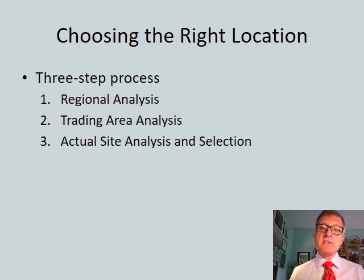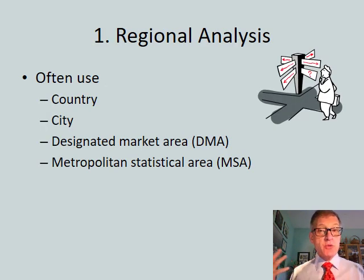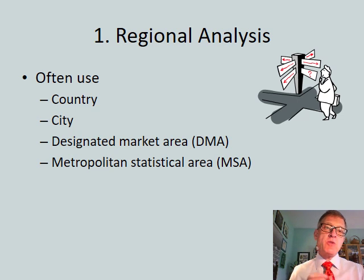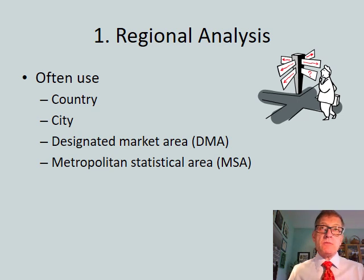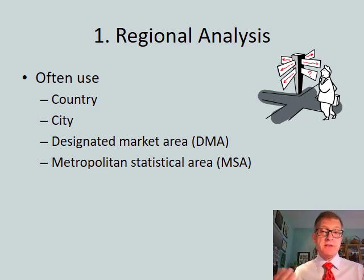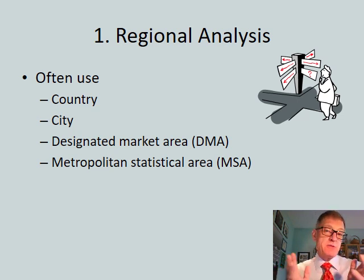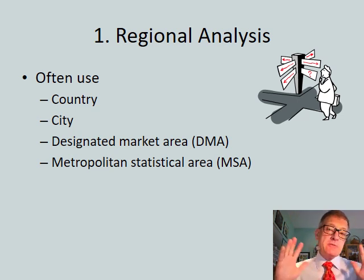When we talk about regions, that tends to be something a little bigger. So if we say Columbus region, it would be central Ohio. We're often using things like a country — so when Walmart wanted to go into Latin America, they chose Mexico as the country within the Latin American region. Drilling down a little bit deeper, we would then look at the city.